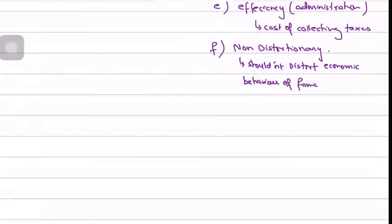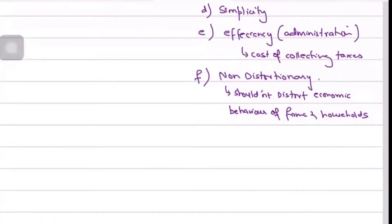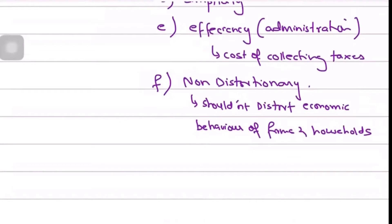It shouldn't distort the economic behavior of firms and households. For example, if you impose very high taxes, it would discourage firms from investing more. Although the government might argue they are getting more revenues, you are also discouraging investment, which is not good. Discouraging investment hampers future economic growth and opens up ways to increase unemployment in the country.